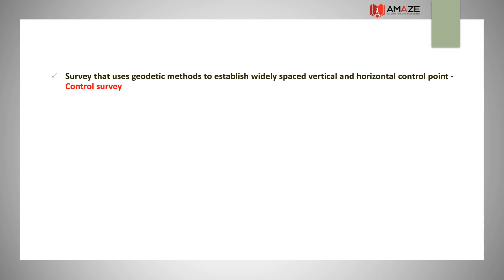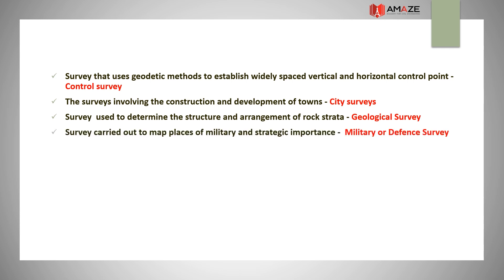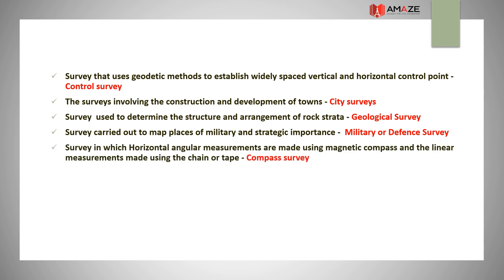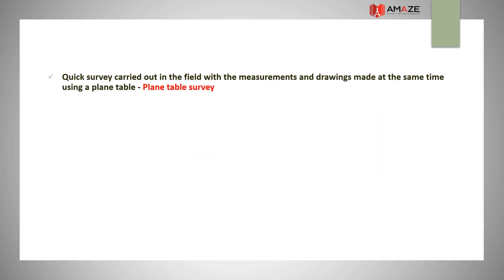Survey that uses geodetic methods to establish widely spaced vertical and horizontal control points is control survey. Surveys involving construction and development of towns is city surveys. Survey used to determine the structure and arrangement of rock strata is geological survey. Survey carried out to map places of military and strategic importance is military or defense survey. Survey in which horizontal angular measurements are made using a magnetic compass and linear measurements using a chain or tape is compass survey. Measurement and mapping of relative heights of points on the earth's surface is leveling. Survey carried out to discover ancient relics of antiquity is archaeological survey. A quick survey carried out in the field with measurements and drawings made simultaneously using a plane table is plane table survey.